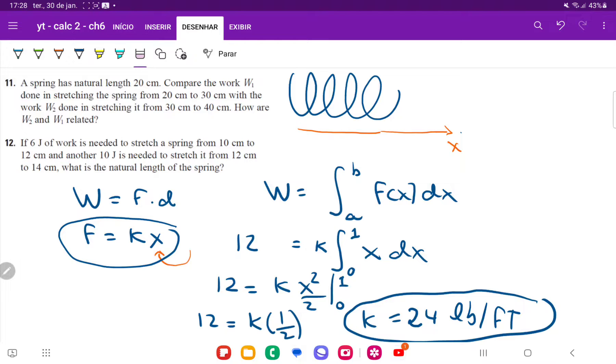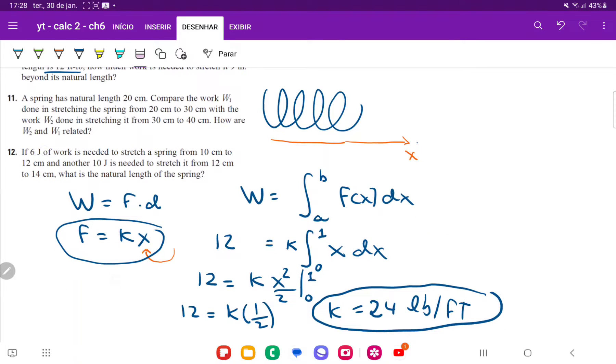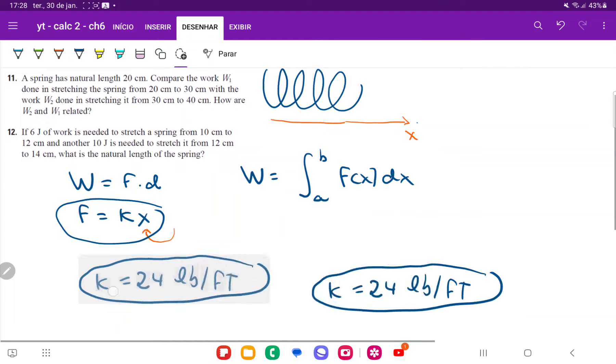Okay, so once we have the constant k, now we can go back to the question, which is how much work is needed to stretch it nine inches beyond its natural length. So what we're going to do here is we're going to now put a new integral for work, and let me just move this out to the side.